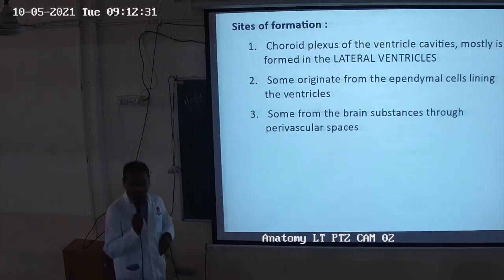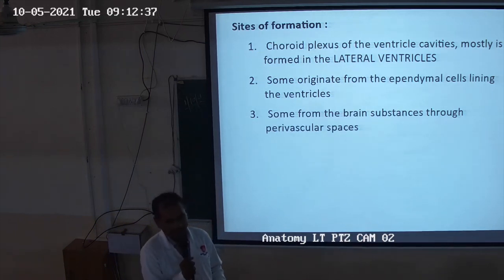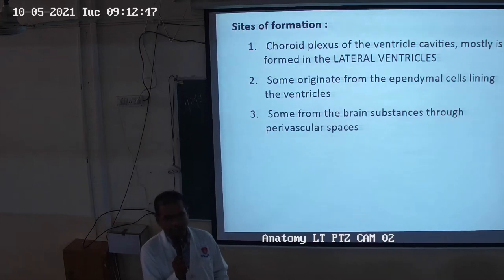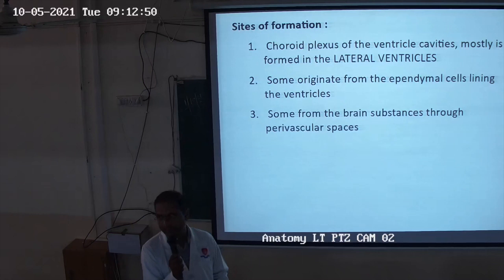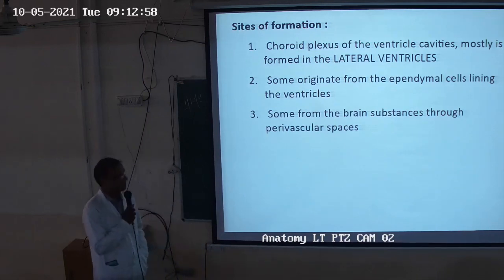Now, regarding formation — CSF is formed by the choroid plexus. The choroid plexus is basically the part of the blood vessels or tiny vessels which are lined by the endothelium. This is an important objective question: the choroid plexus is lined by the endothelium, not epithelium.